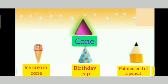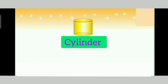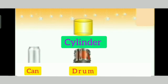Now, let's have a look at cylinder. And here are few objects like can, drum and mug. These all appear to be cylindrical in shape.